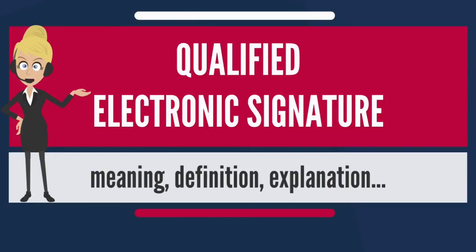eIDAS requires that no electronic signature should be denied legal effect or admissibility as evidence solely on the grounds that it is in an electronic form or that it does not meet the requirements for qualified electronic signatures. The qualified electronic signature shall have the equivalent legal effect as a handwritten signature. Its evidentiary value depends on the circumstances, but will normally be considered very high.